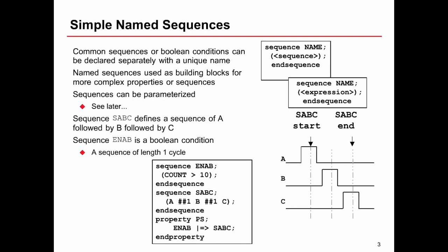An example shown here is a sequence whose name is S_ABC. That defines a sequence of A followed one cycle later by B, followed one cycle later by C. Looking at the timing diagram — and remember this is a sequence, not an assertion that will pass or fail — we can see on one cycle we've got A, B and C. Also shown and very important is a sequence called A_NAB, which is simply defined by a boolean expression. A sequence of length one cycle is the same thing as a boolean expression, so you can use them interchangeably.